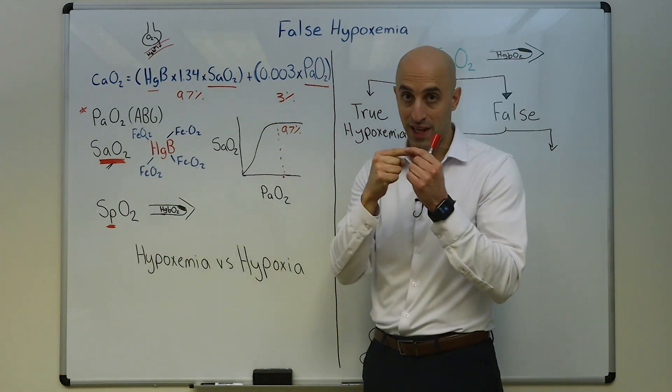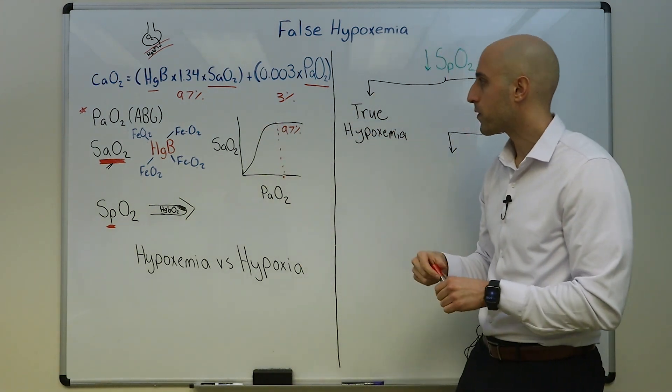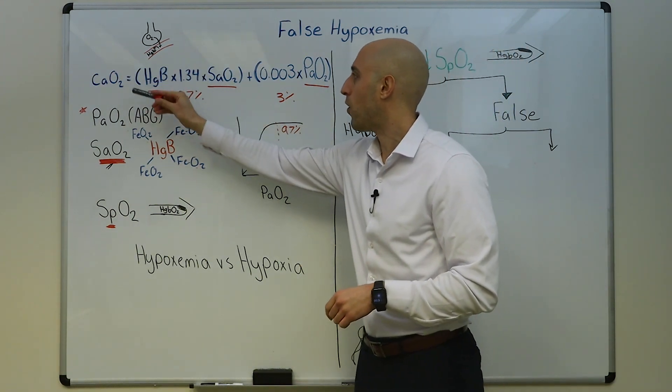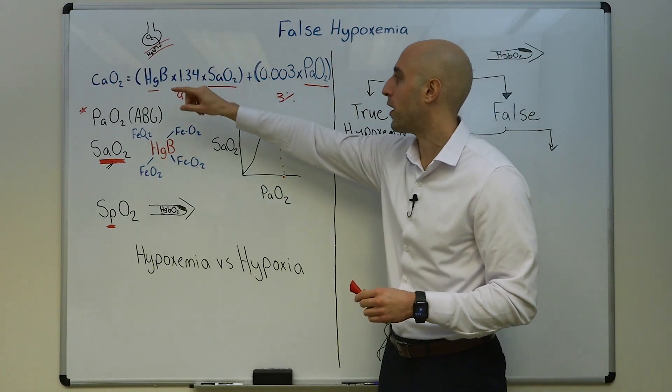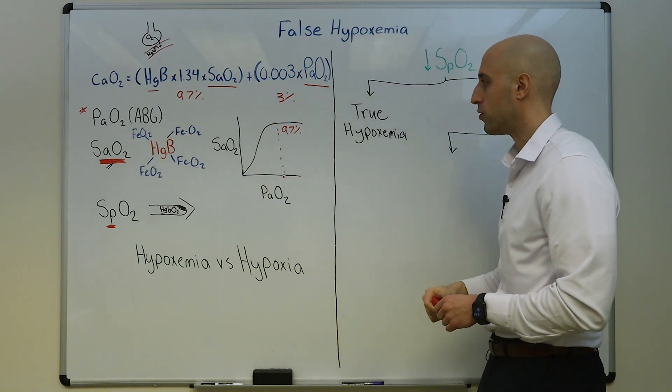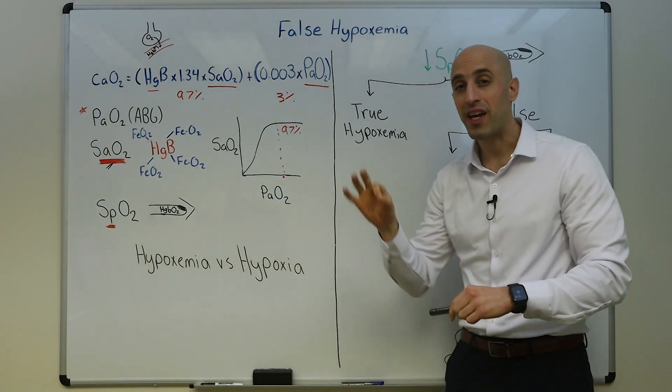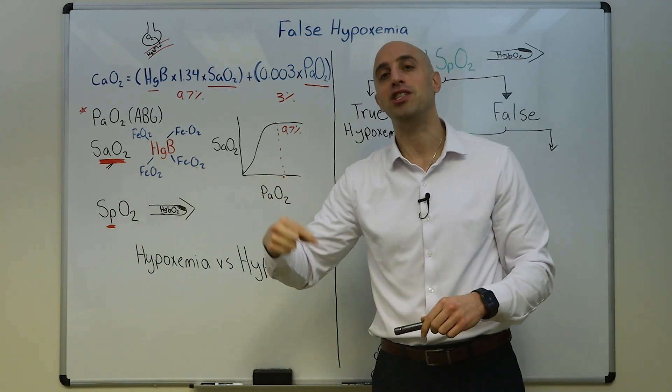And it assumes that there isn't carboxyhemoglobin or methemoglobin, so you're making all those assumptions when you determine this O2 sat from the blood. So now you understand the difference between hypoxemia and hypoxia. We said that the SpO2 is based on a measurement, the pulse ox using different wavelengths of light.